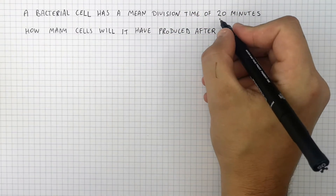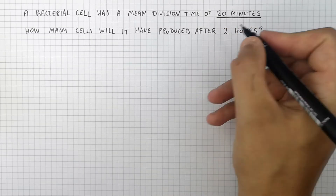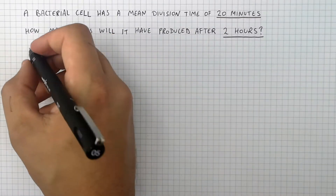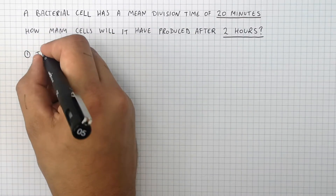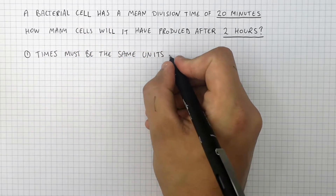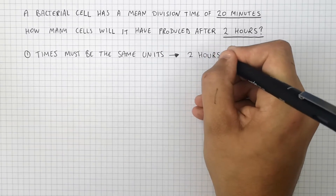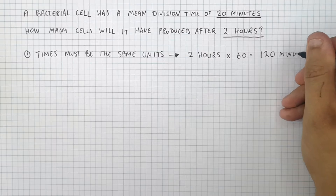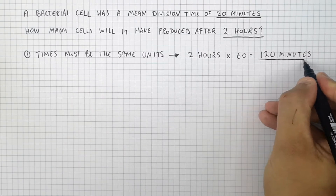So we've got the mean division time, which is 20 minutes, and you've been asked to figure out how many cells will it have produced after 2 hours. These are different units. The first step is to work out that the times must be in the same units. So you want it in minutes, so you'll do 2 hours times 60. That will give you 120 minutes.